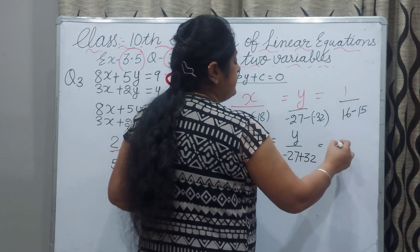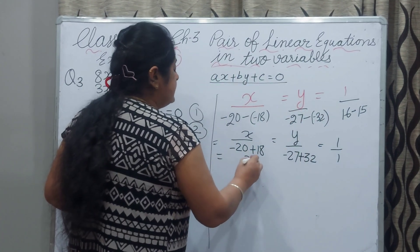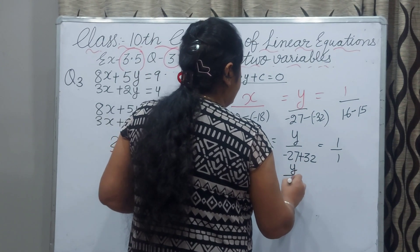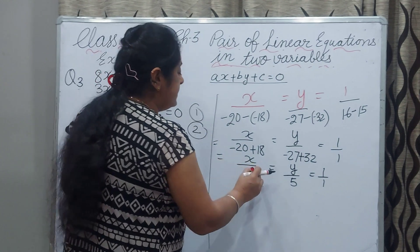And 16 minus 15, 1 by 1. Now x minus 2, y 5 equals 1 by 1. First we compare this.